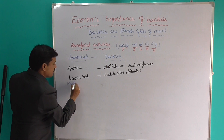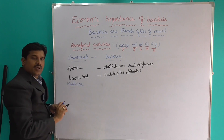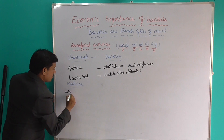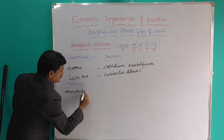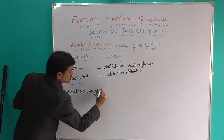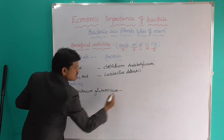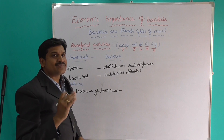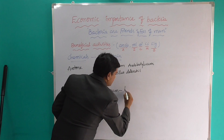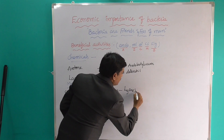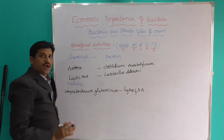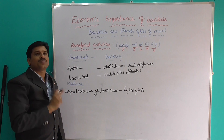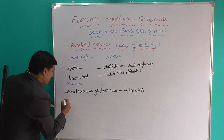In medicine, bacteria are useful for different activities. Corynebacterium glutamicum is helpful for producing lysine and amino acids, and is very very useful. Not only for producing lysine and amino acids, but bacteria are also important for producing antibiotics.